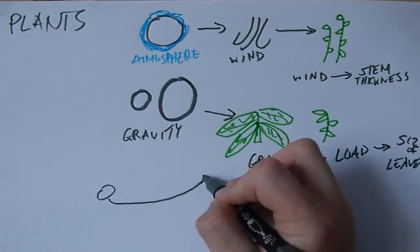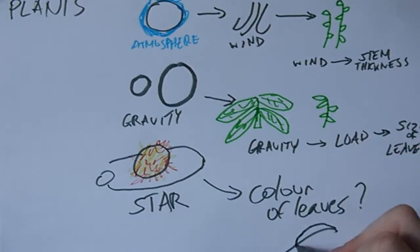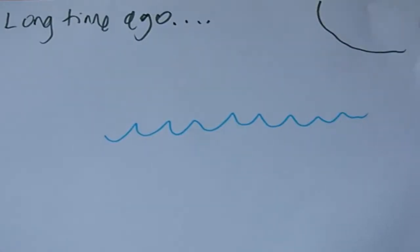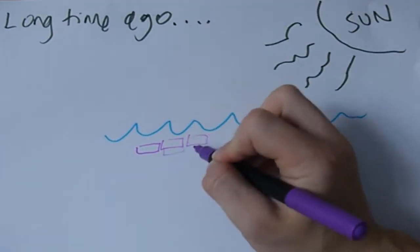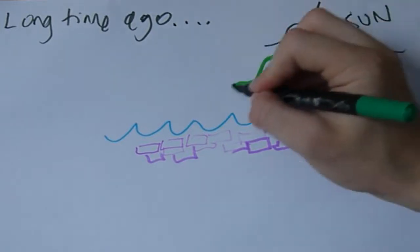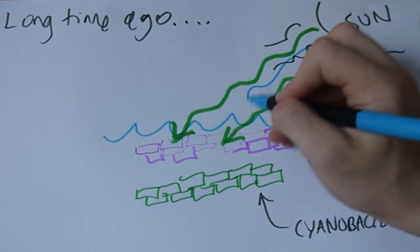Most interestingly, what about the planet's star? It's difficult to predict how this would affect the color of the leaves. It's thought that our plants have green leaves because of competition before plants had even evolved. The competitor in question, purple sulphur bacteria, absorbed all of the green light, making it vital for the ancestors of plants, cyanobacteria, to absorb the other colors.